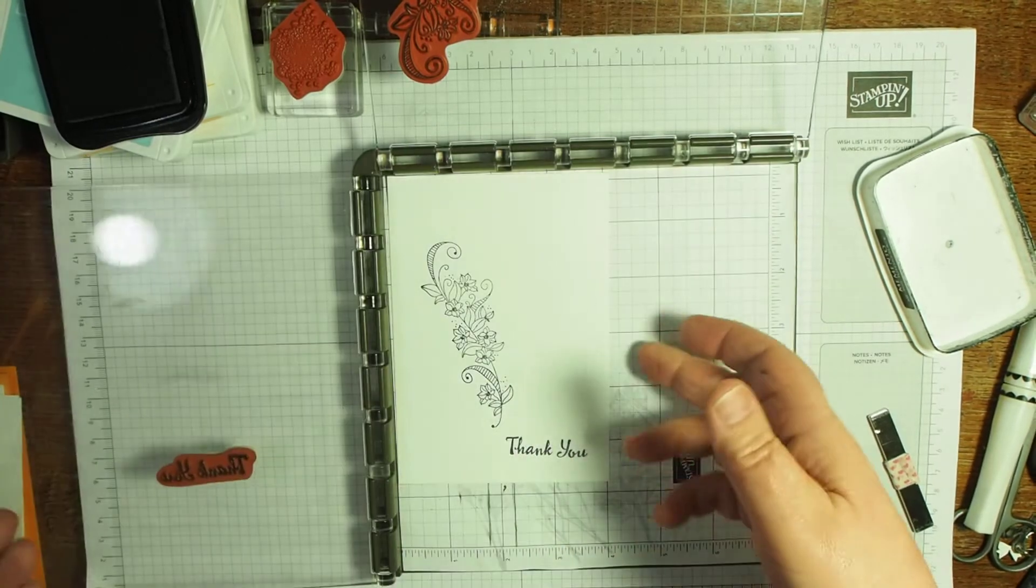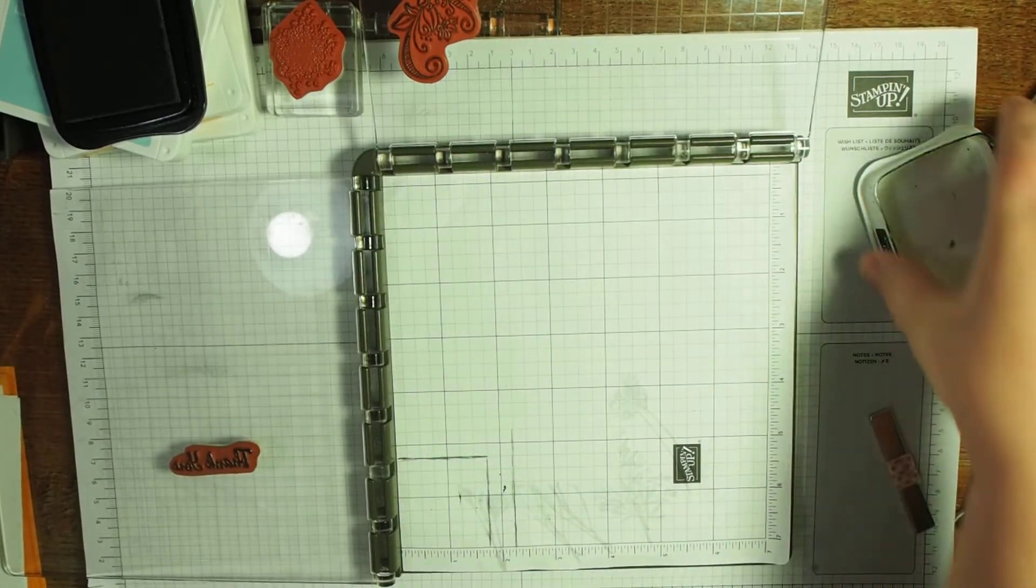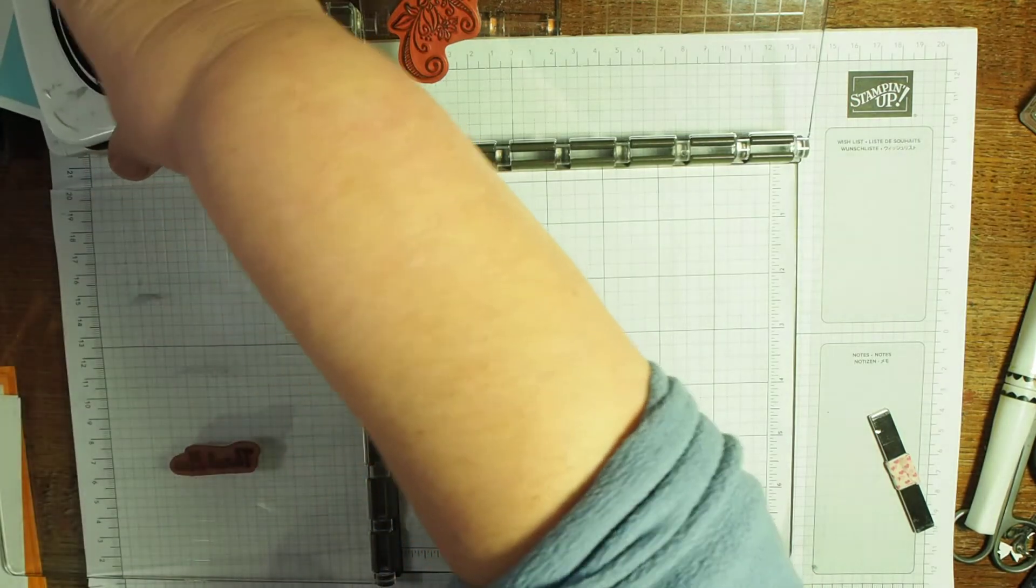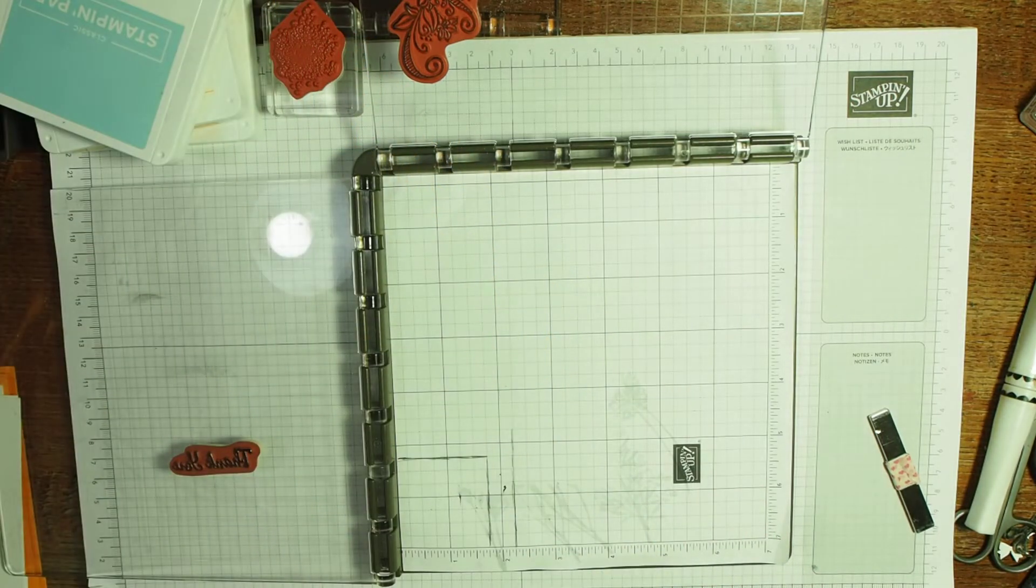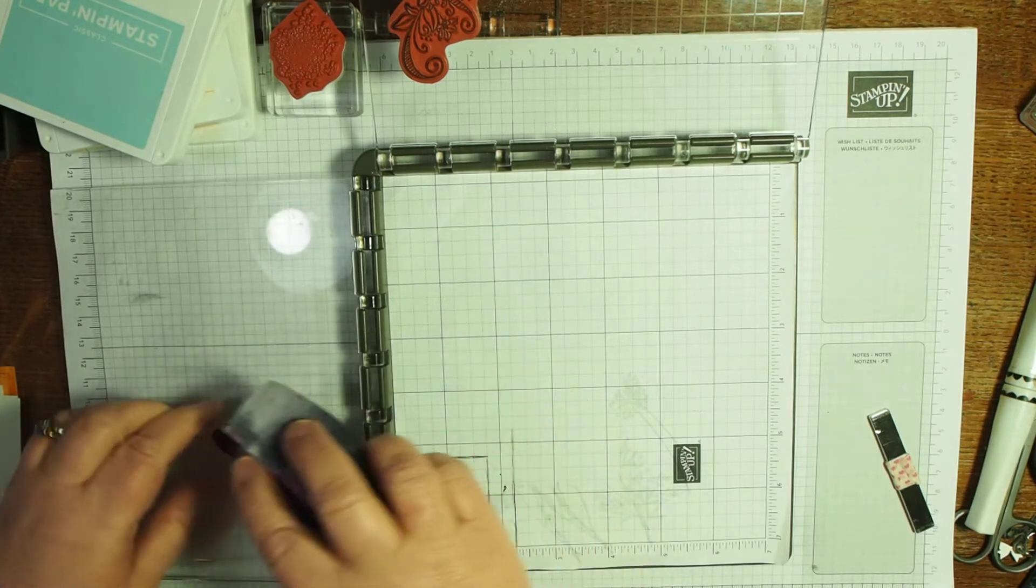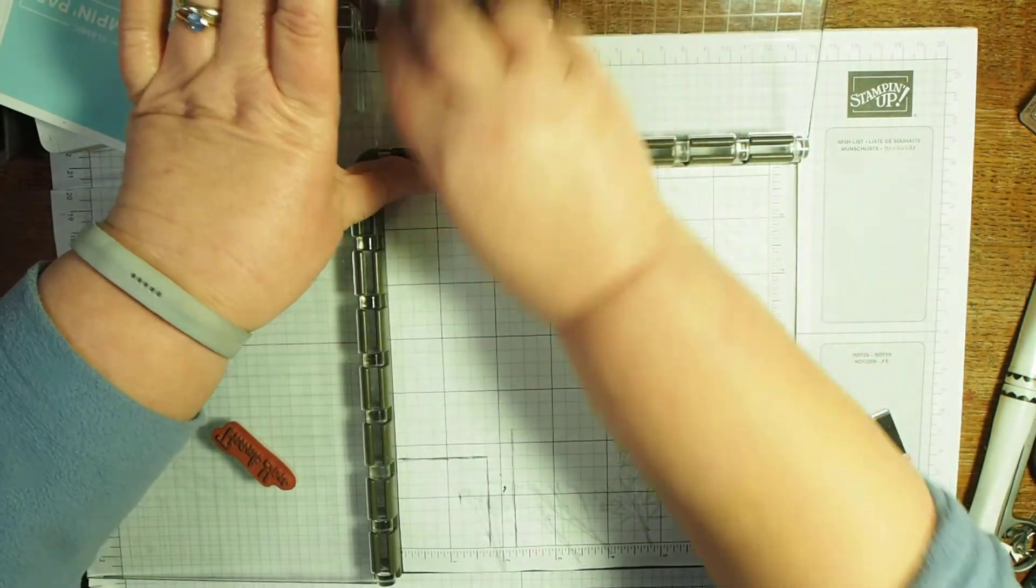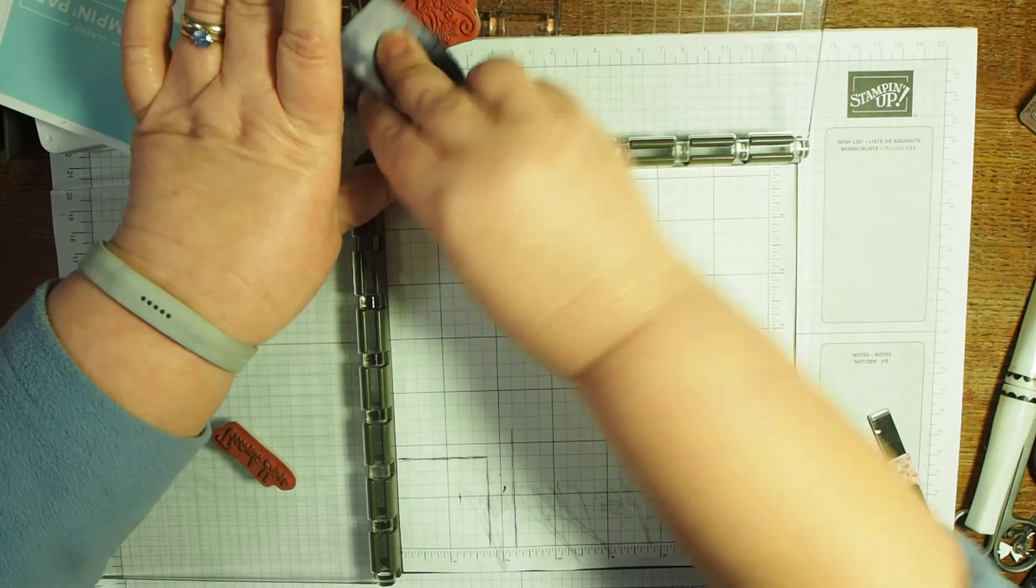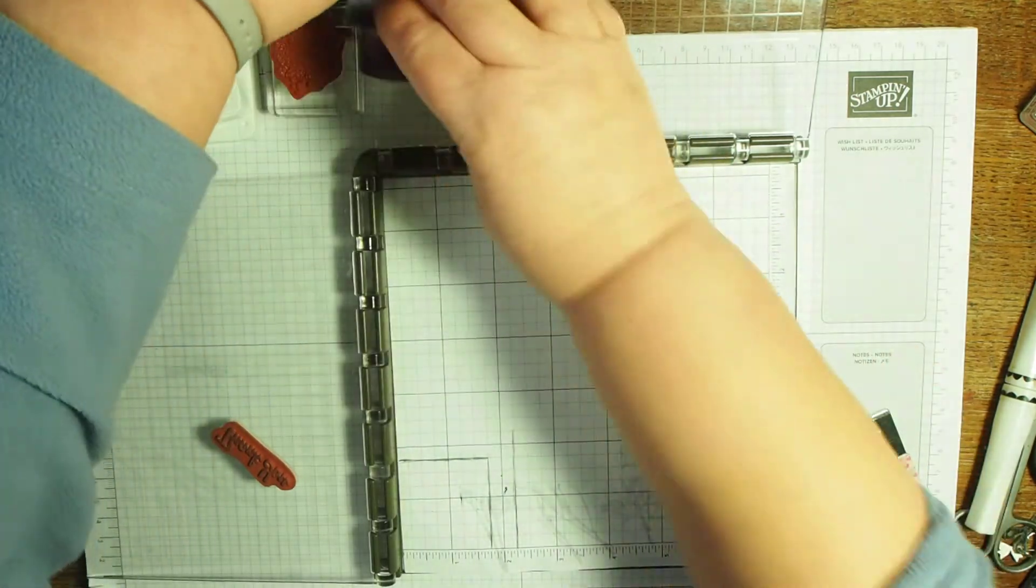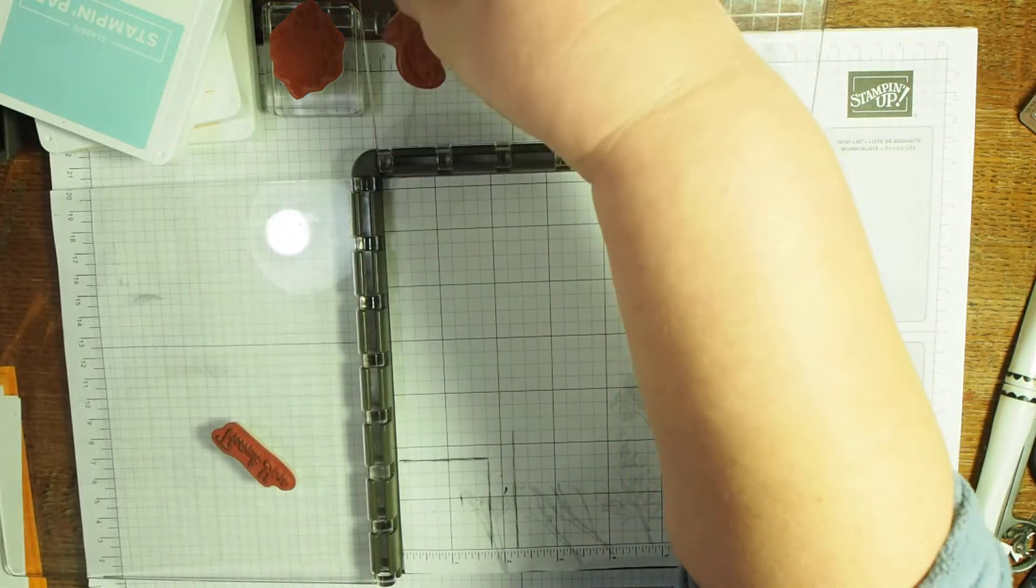So there you go—four card fronts done just like this. Lid on ink, and let's clean these stamps off. That one was easier to clean because it's on with a cling mount stamp so it stays put a bit better.